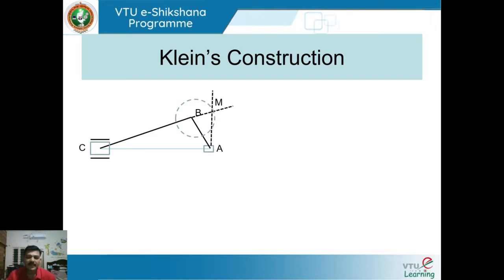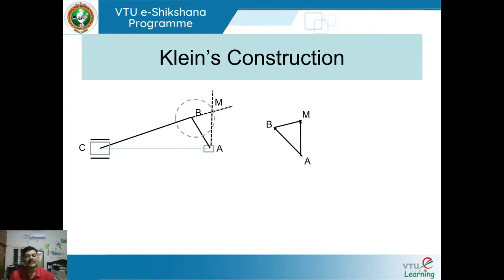You can observe there is a triangle formed: ABM or BMA. When this triangle BMA is reconstructed separately, it gives the velocity diagram. Yes, this triangle gives the velocity diagram of the given slider crank mechanism.